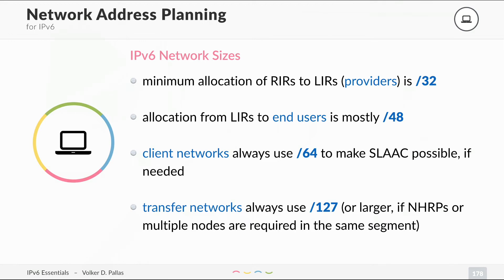In IPv4, you might have calculated how many hosts you have — do I need a slash 24, a slash 23, or maybe a slash 27? This doesn't matter with IPv6. You always use a slash 64. Don't even count how many hosts that is — it's more than enough, but you should not make it smaller.